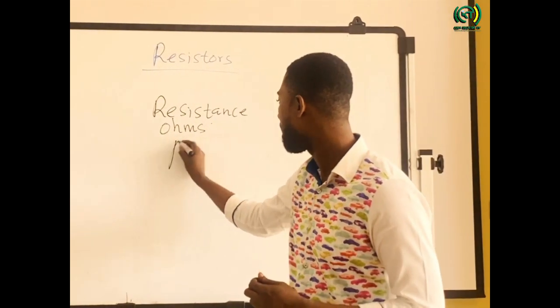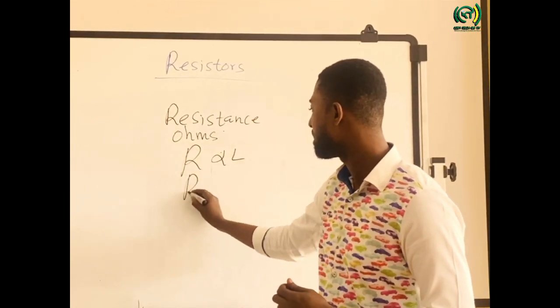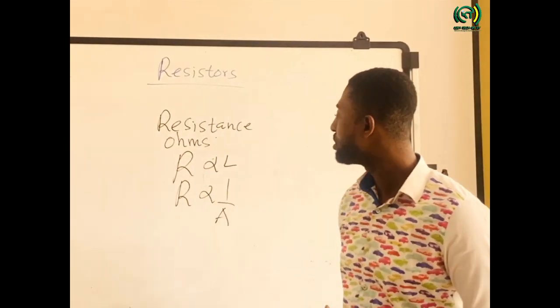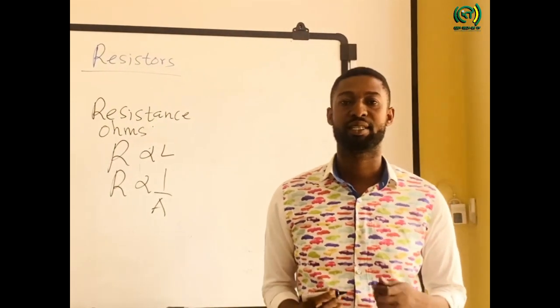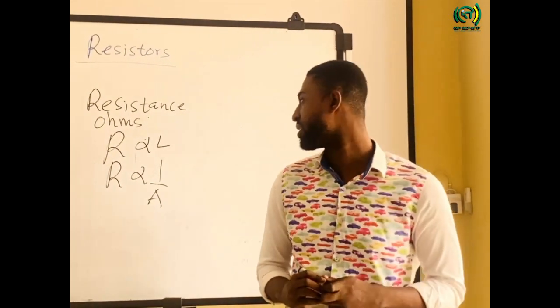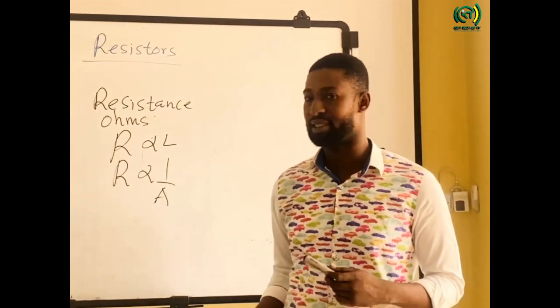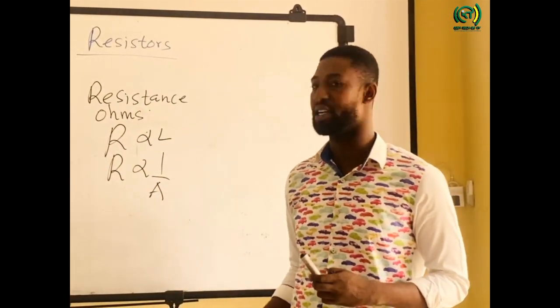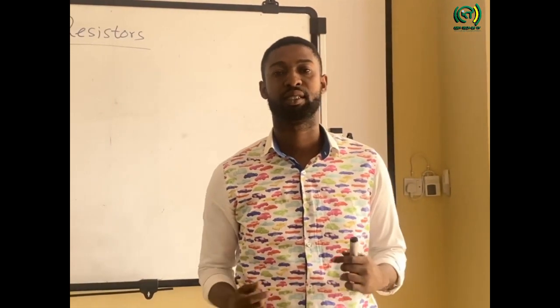So, how is resistance directly proportional to the length, and inversely proportional to the area? If I want to reduce the resistance of any material, I can simply decrease the length and also increase the cross-sectional area. Resistors can be connected in series.